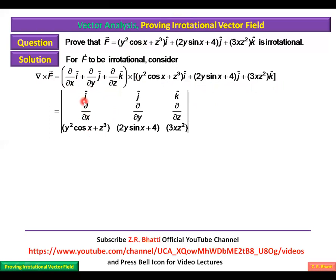We use the determinant formula for the cross product. The first row contains i, j, k; the second row contains the operator components ∂/∂x, ∂/∂y, ∂/∂z; and the third row contains the vector F components: (y² cos x + z³), (2y sin x + 4), and (3xz²).